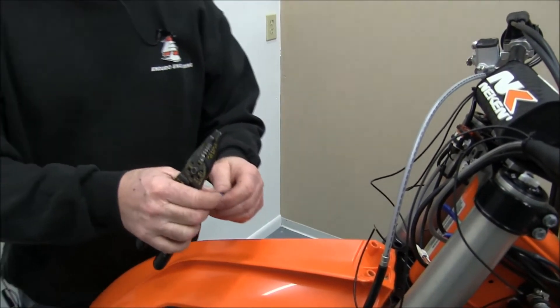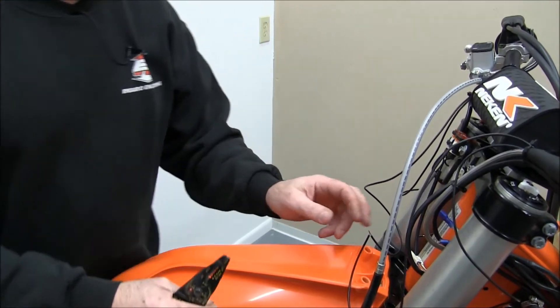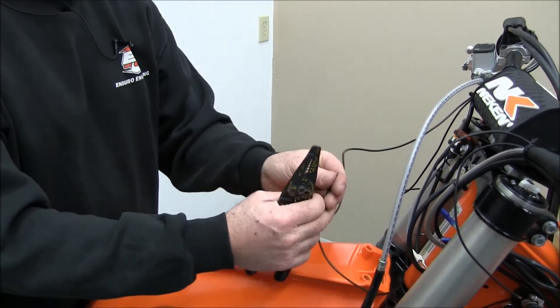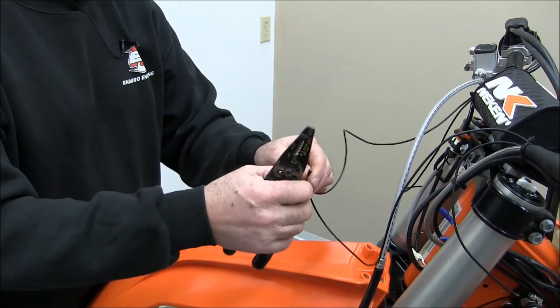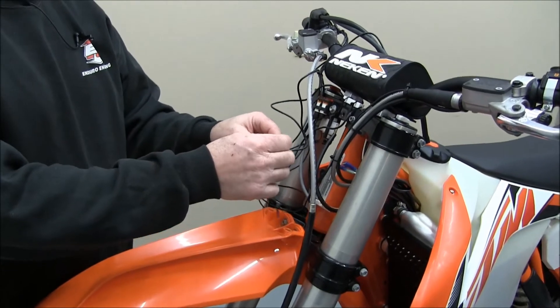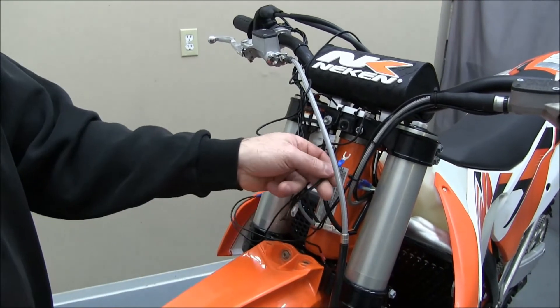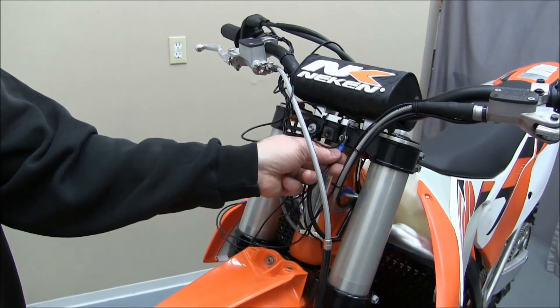I'm going to take a little crimp on connector and attach it to these wires. Okay, now that we've got that piece crimped on there, we'll go ahead and ground it.